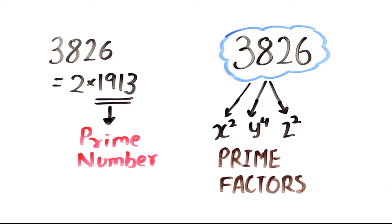Since the prime factors of 3826 are not raised to an even number, we can say without any doubt that this is not a perfect square.